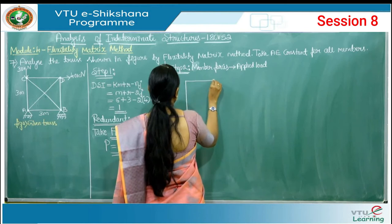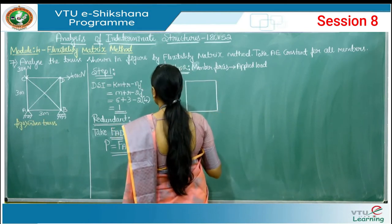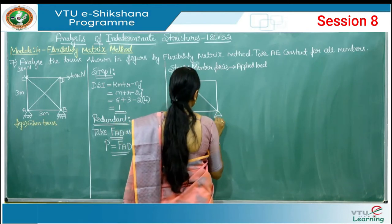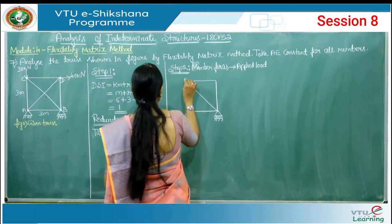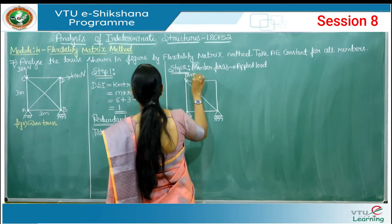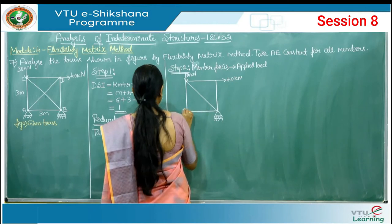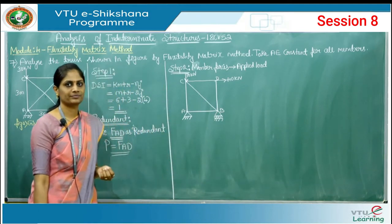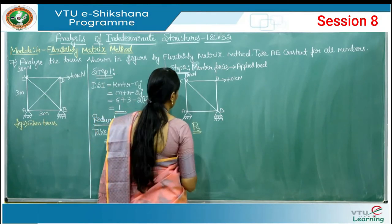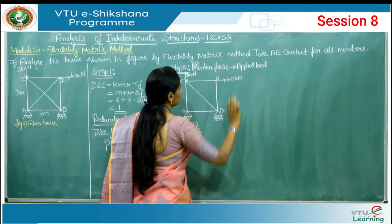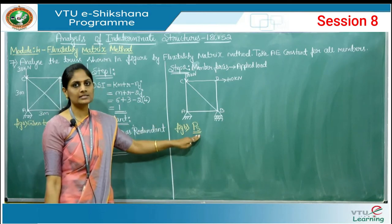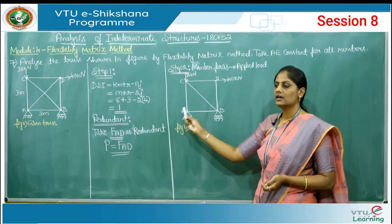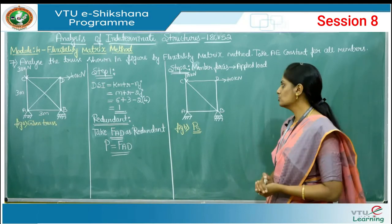Rewrite the diagram of the truss but remove the redundant member AD. This gives a truss with the 30 kN and 40 kN loads applied, with joints A, B, C, D and the same supports. Call this figure B. From this diagram we calculate the member forces due to the applied loading, denoted as Ps. We use the method of joints to find the member forces.